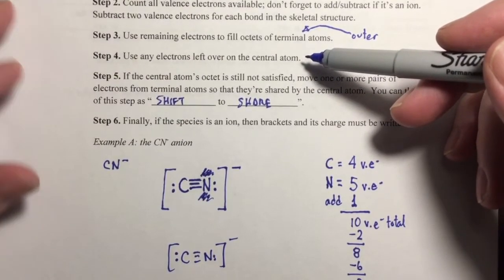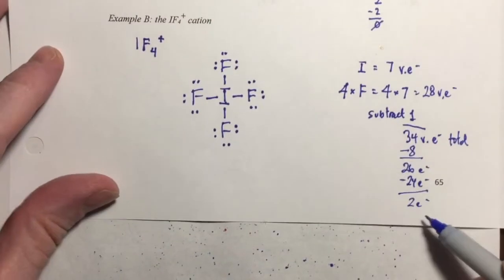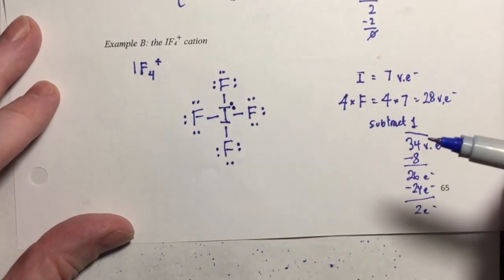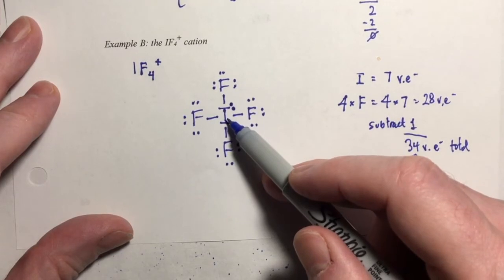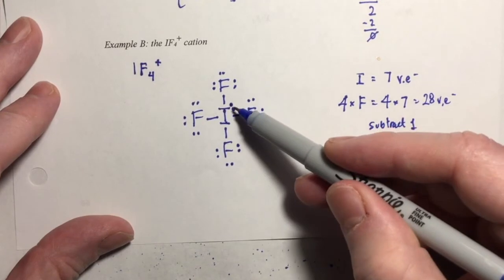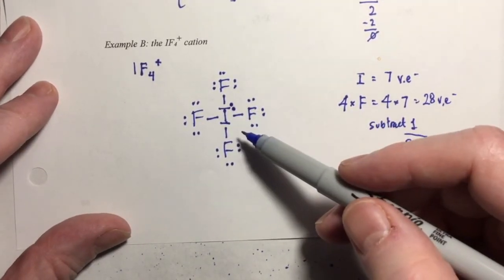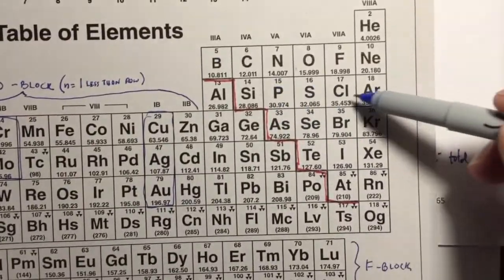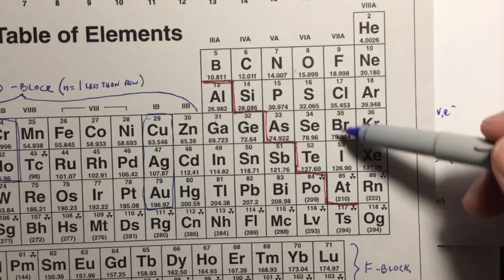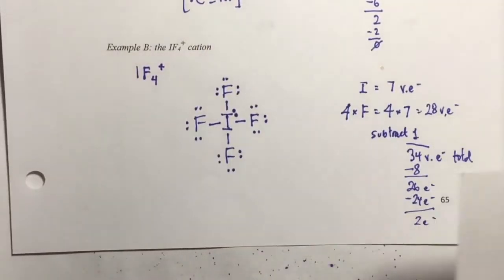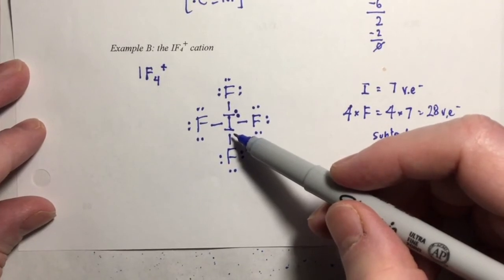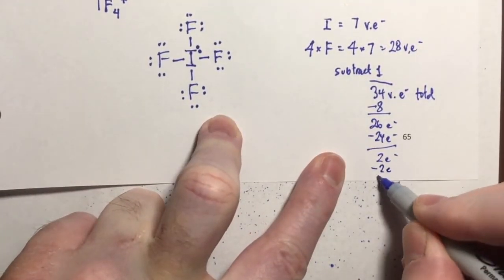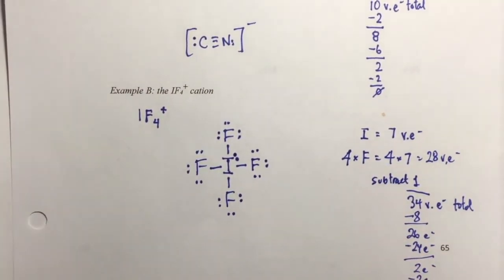Step four: use any electrons left over and put them on the central atom. I have two electrons left, so I place them on the iodine. Now iodine has two, four, six, eight from the bonds, plus the unshared pair makes ten electrons around it. Remember, atoms in the third row or lower acting as a central atom can exceed the octet — up to twelve electrons. Iodine is definitely in the third row or lower and is the central atom, so having ten electrons is acceptable. All valence electrons are now distributed.